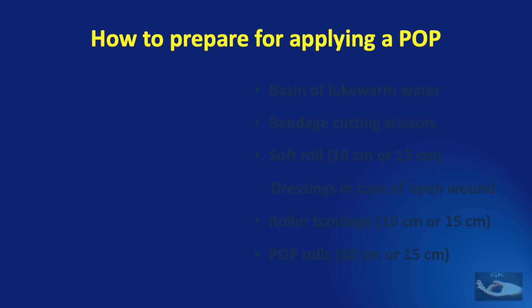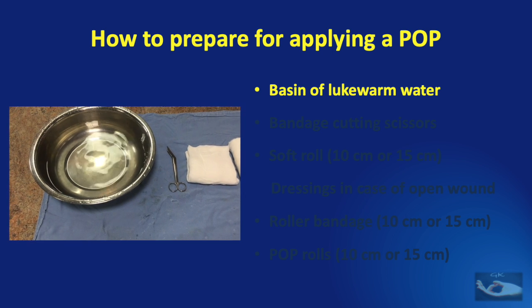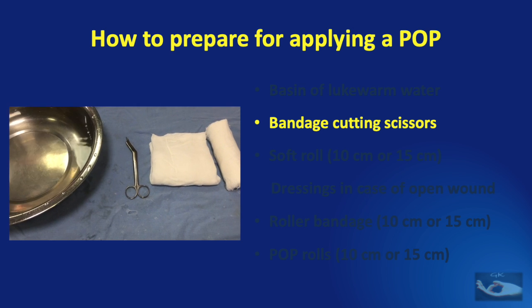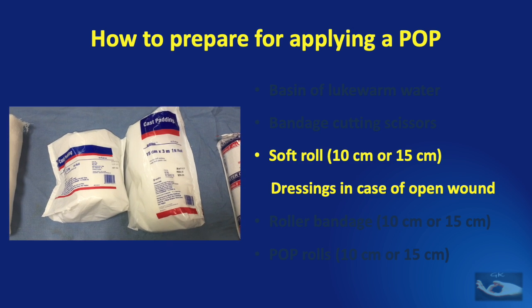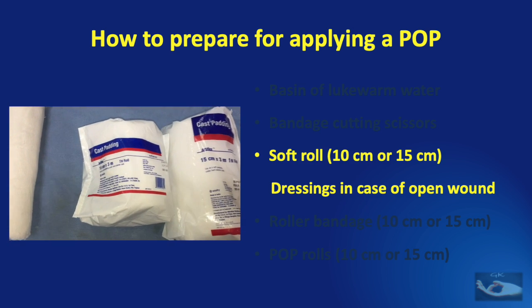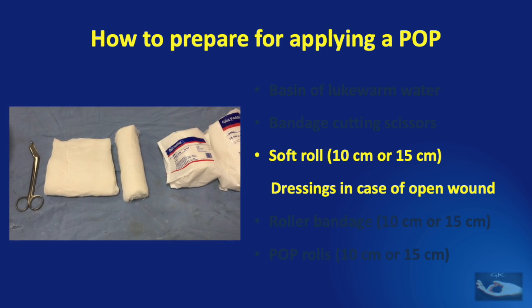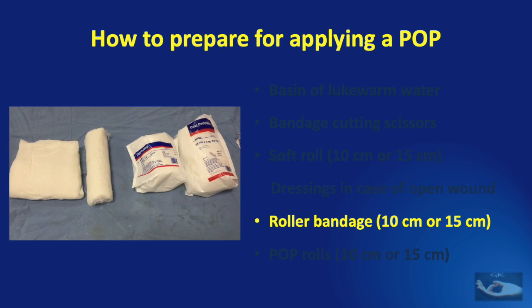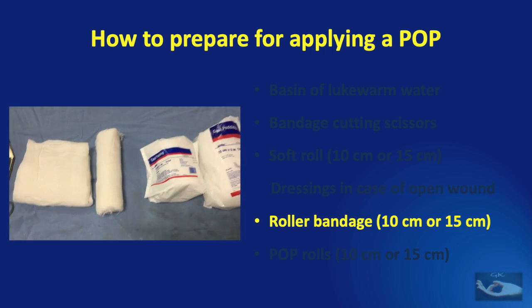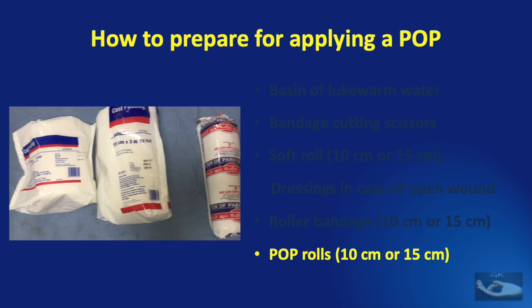Having planned our POP and having planned what position we are going to place the hand in, we now need to get the POP ready. But before that we need to prepare for this and for this we need a basin of lukewarm water, a bandage cutting scissors, a soft roll of 10 cm or 15 cm and in case of a wound a dressing needs to be applied and a roller bandage of 10 cm or 15 cm will be needed. And finally the POP roll.